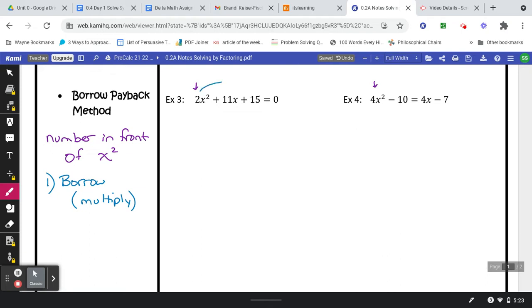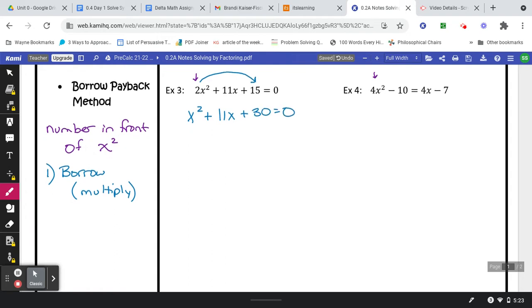So I'm going to borrow this 2 and multiply it over by the 15. Look for numbers that multiply to 30, which would be 6 and 5 are the pair that you're going to add to 11. Both positives.